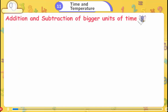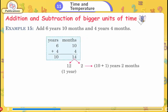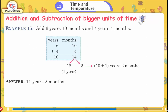Addition and Subtraction of Bigger Units of Time. Example 15: Add 6 years 10 months and 4 years 4 months. The months total 14, and since 14 months = 12 months (1 year) + 2 months, the answer is 11 years 2 months.